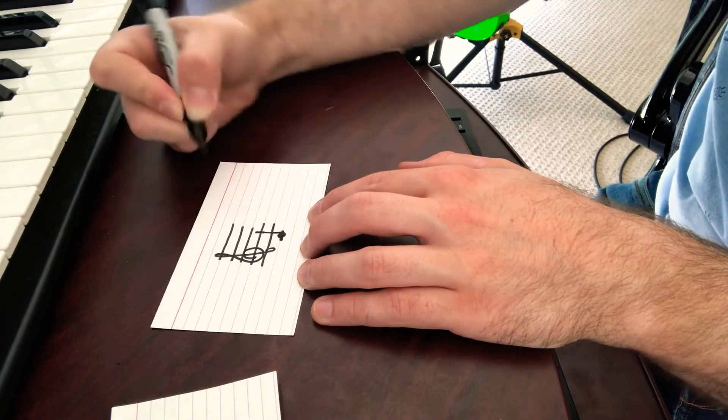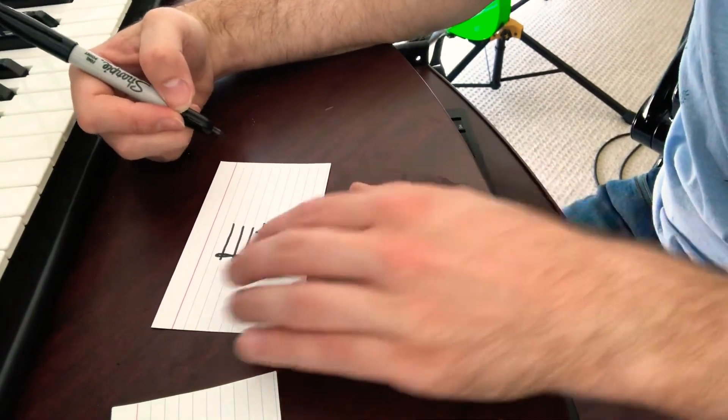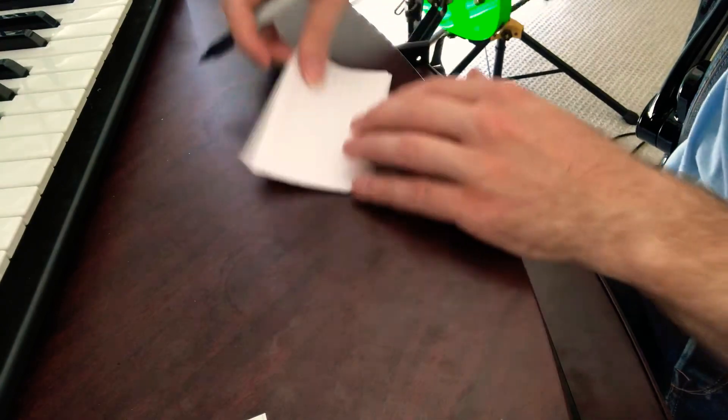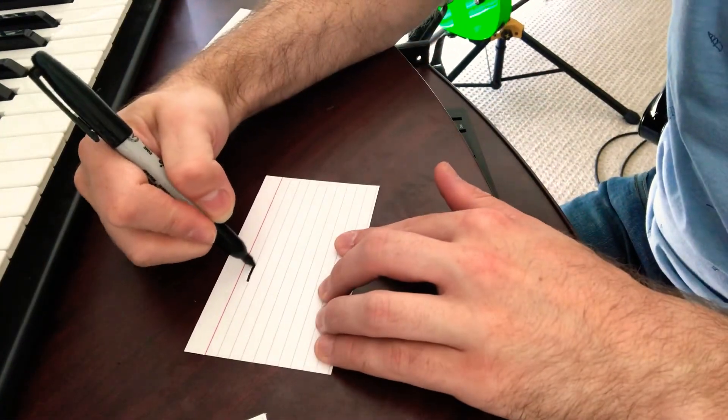You do the same thing. You go up a couple lines and just stop about halfway through the next space, just like that. And you can keep going down through all the notes that you might see in your method book.